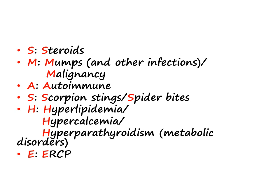E stands for ERCP — endoscopic retrograde cholangiopancreatography — which accounts for 2.5 to 5% of acute pancreatitis cases. The last cause is D, which stands for drugs. There is a separate mnemonic for drugs causing pancreatitis, which will be dealt with later in the video.